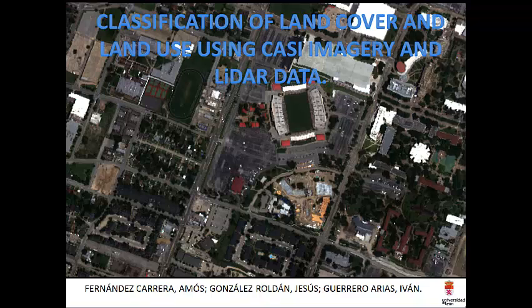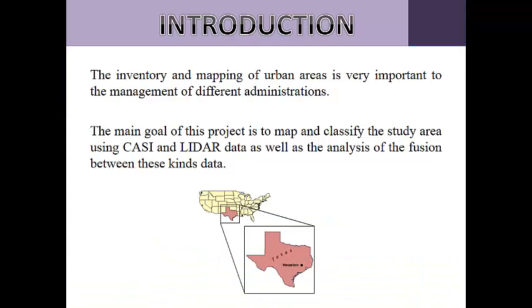This video will deal with the classification of land cover and land use using CASI imagery and LiDAR data. The inventory and mapping of urban areas is very important to the management of different administrations. Therefore, updating this inventory and urban area maps is highly relevant. The main goal of this project is to map and classify the study area using CASI and LiDAR data, as well as the analysis of the fusion between these kinds of data. The combination of both datasets, CASI and LiDAR, offers the potential for data mapping and monitoring of materials based on their spectral and structural characteristics.